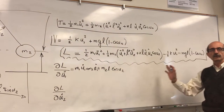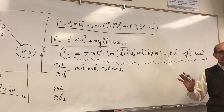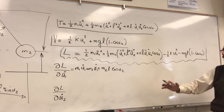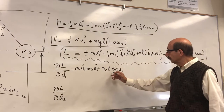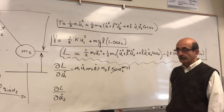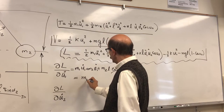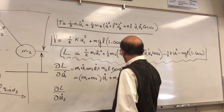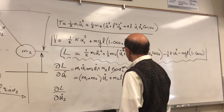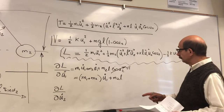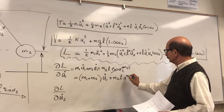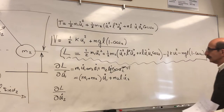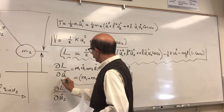Notably, Lagrange's approach does not restrict you to small angles. But since we are dealing with linear systems, I'll assume U2 is very small, so cos(U2) ≈ 1. This simplifies the expression to: (M1 + M2)·U1-dot + M2·L·U2-dot. That's the simplified partial derivative of L with respect to U1-dot.